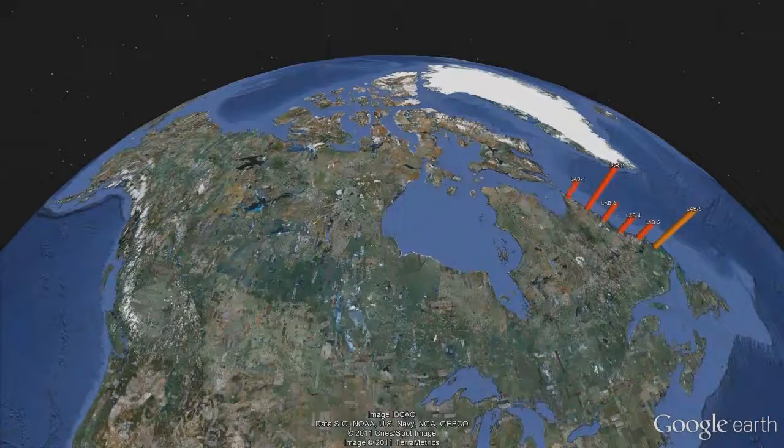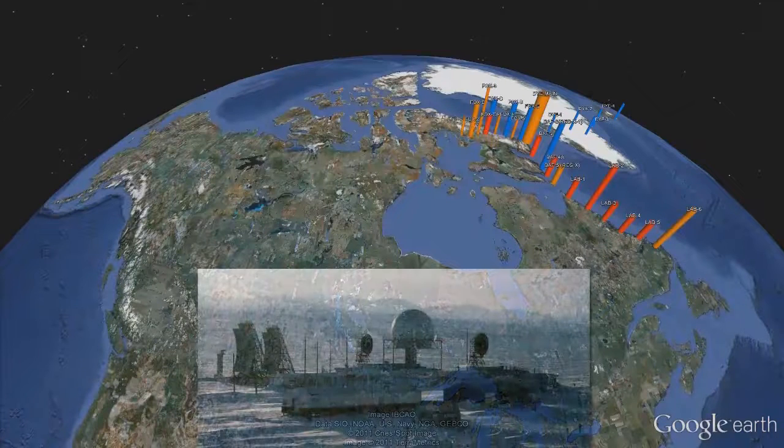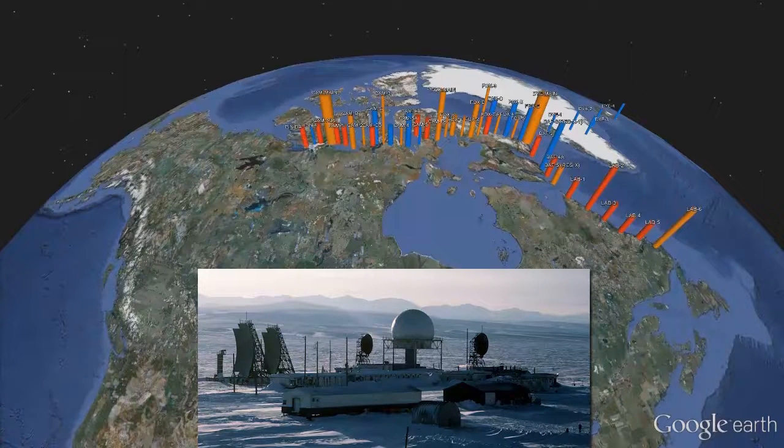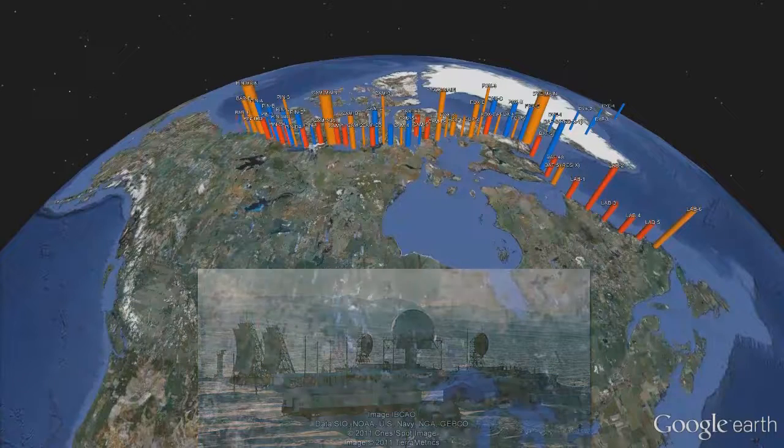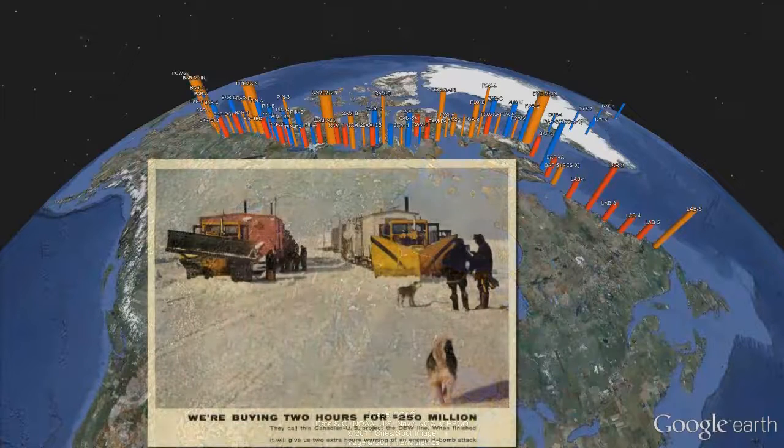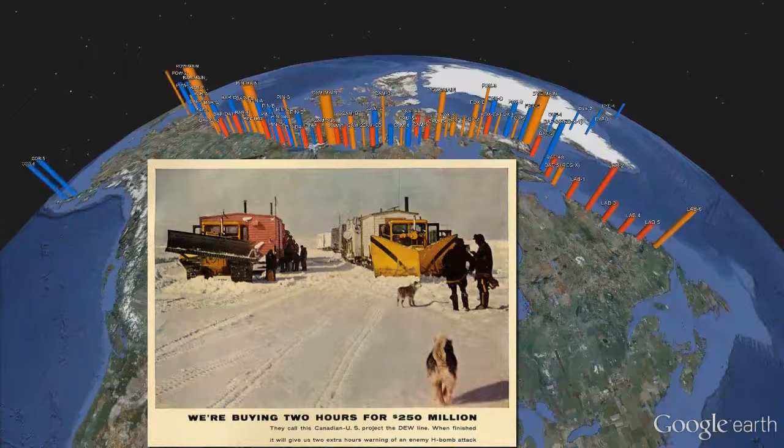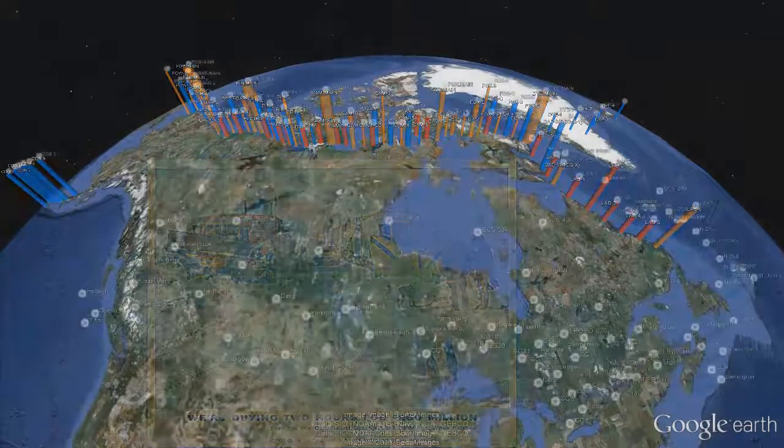In 1957, the distant early warning, or DEW line, became fully operational. The initial DEW line consisted of 58 radar facilities located along the northern Canadian border. This line was subsequently expanded to 88 stations in the Bering Straits of Alaska, as well as Iceland and Greenland. Over 460,000 tons of materials were moved from the U.S. and Canada to the Arctic by air, land, and water over a three-year period to construct the DEW line.